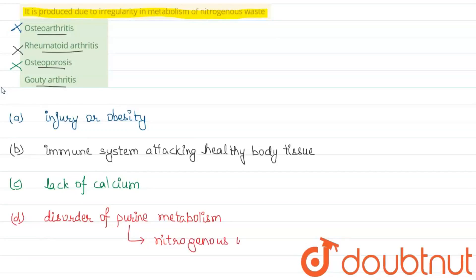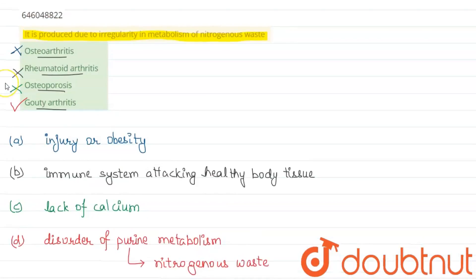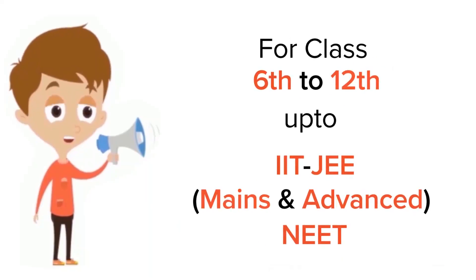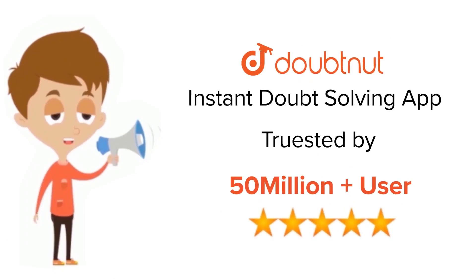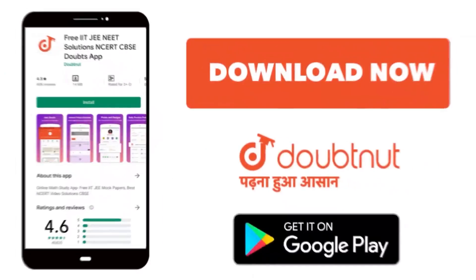So this option is correct. Hence we have the final answer as: it is produced due to irregularity in metabolism of nitrogenous waste is gouty arthritis. For class 6 to 12, IIT-JEE, and NEET level, trusted by more than 5 crore students. Download Doubtnet today.